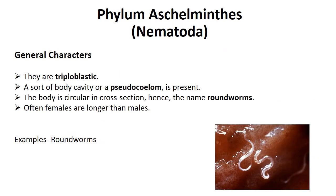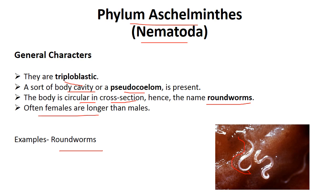Then phylum Aschelminthes or Nematoda — these are called roundworms. They are triploblastic and their body cavity is pseudocoelomate. The body is circular in cross-section, hence the name roundworm. Most importantly, in phylum Aschelminthes, the female is larger than the male.